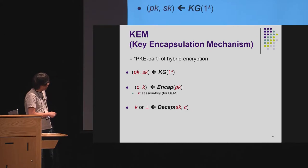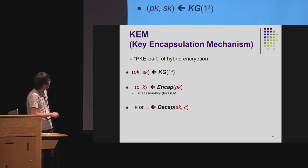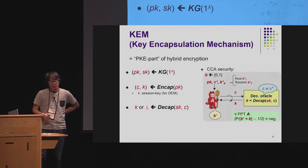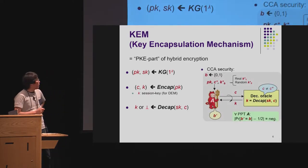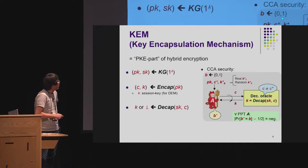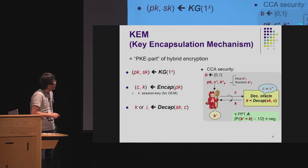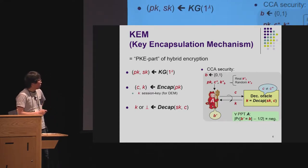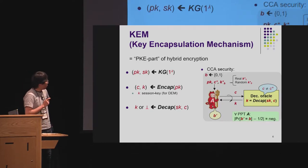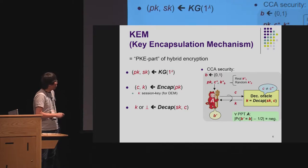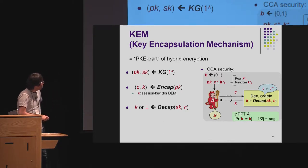Unlike PKE, the encapsulation algorithm only takes a public key and returns a pair: ciphertext C which encapsulates session key K, which can be recovered in decapsulation. For this primitive, CCA security is naturally defined: given the public key, challenge ciphertext C, and challenge session key K which is either real or random, the adversary has access to the decryption oracle and must guess the challenge bit. The adversary's advantage should be negligible. If we don't consider the decryption oracle, we say it is CPA-secure.